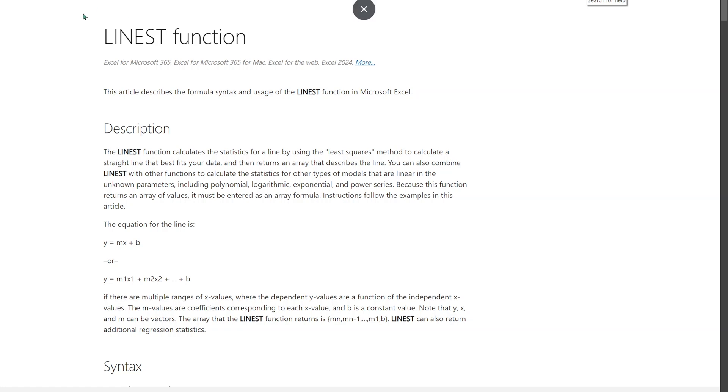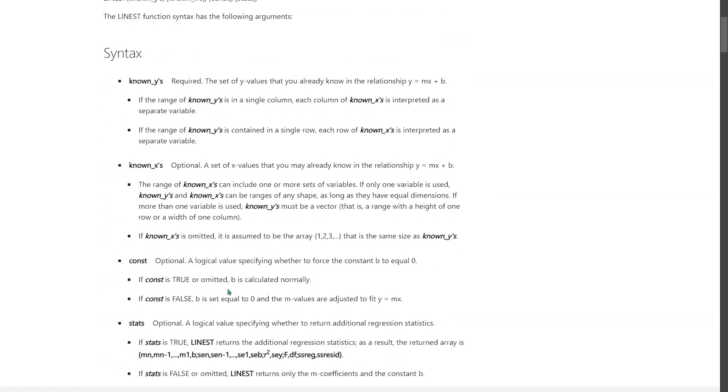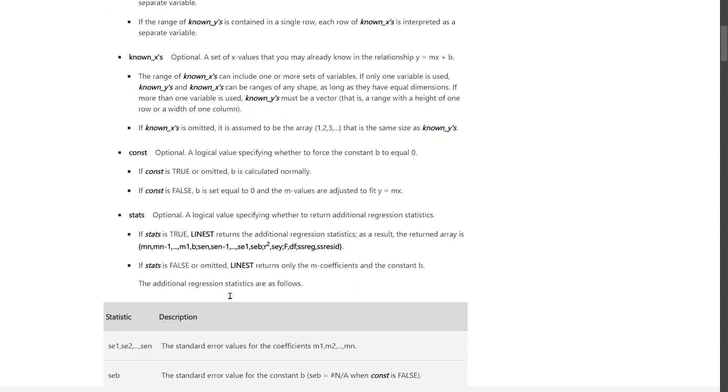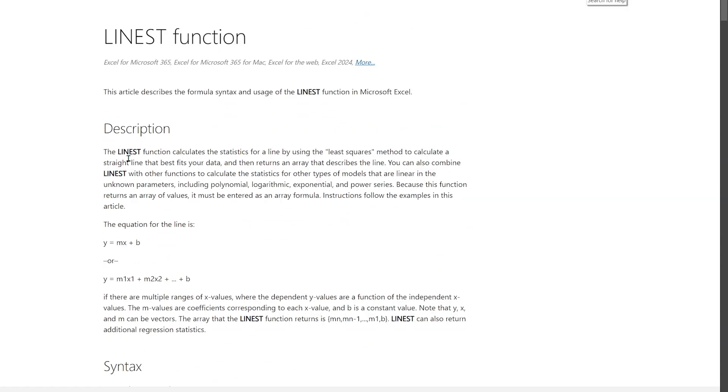This is the linest function. This is the documentation on Microsoft's website. I suggest you look it up. There's a lot of information here on how exactly it works. But what you need to know essentially is that this is where we apply the least squares method. This is where we use the least squares methods to fit a straight line to our variables.